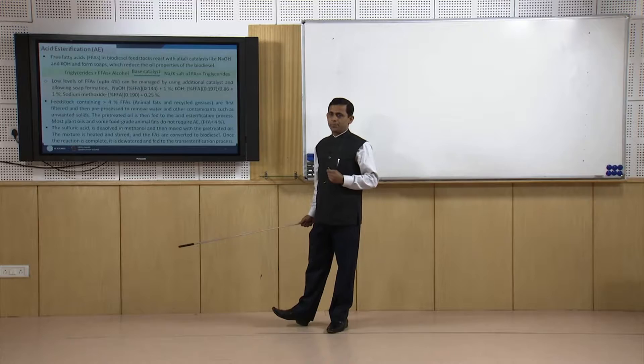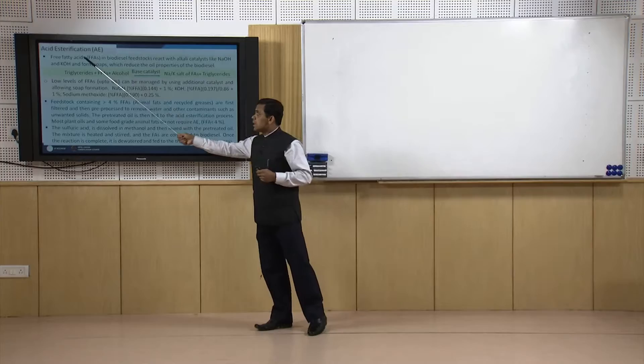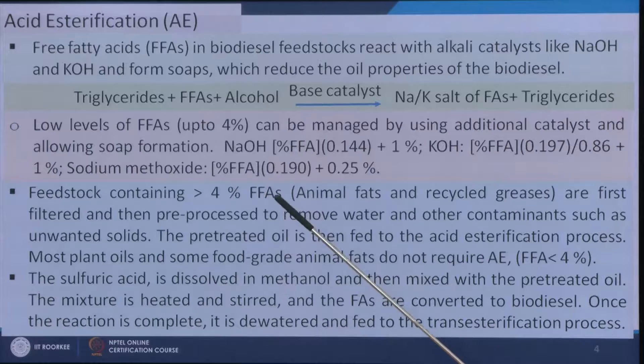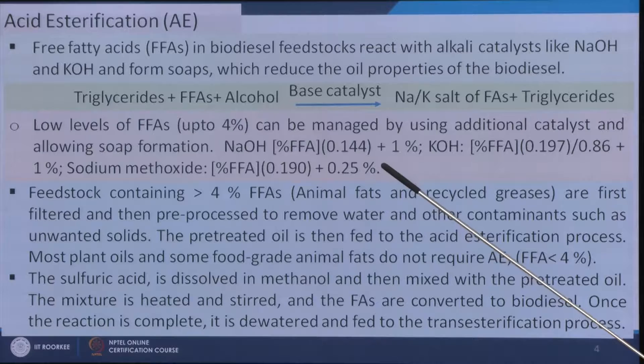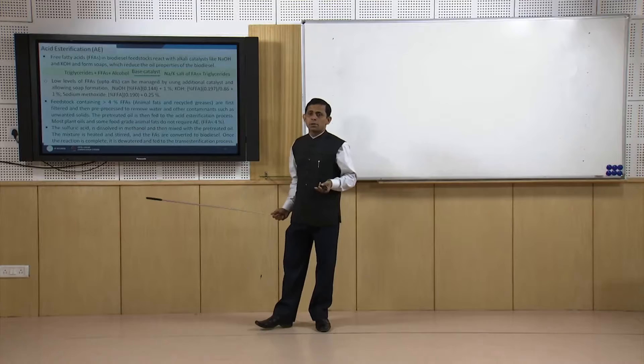To tackle this situation, if the free fatty acid content is very less — say less than 4 percent — then no acid esterification pre-treatment step is applied. In that case, an additional amount of sodium hydroxide or potassium hydroxide is added. For NaOH: (% free fatty acids × 0.144) + 1%; for KOH: a similar formula applies; and for sodium methoxide catalyst: (% free fatty acids × 0.190) + 0.25%. This is the additional amount of alkali used to neutralize these acids.